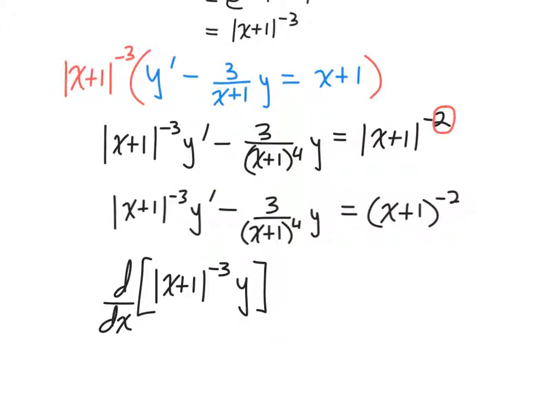So if this were the product that through its expansion using the product rule became this, then this should be the second function times the derivative of the first. The second function is y. The derivative of the first would be negative three times x plus one to the negative fourth, license to get rid of the absolute value, times the one. So that checks out. So we're in good shape there.